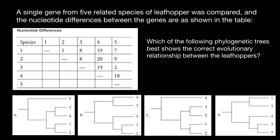Now let's find the species with the minimum number of mutations. That's going to be species one and two — only one nucleotide difference when we compare their genes. That means on the phylogenetic tree these species have to be very close. We can see species one and two are very close on some trees, but on one option the closest species shown are three and five, not one and two.